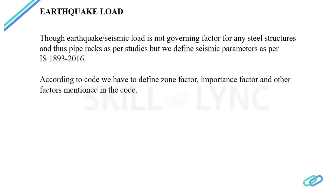Earthquake load is not as governing a factor for steel structures or pipe racks — it is a rare case that earthquake governs. However, seismic parameters are defined as per IS 1893:2016, the latest Indian code. Since IS 800 for steel mandates that earthquake loads be applied, we must include them regardless of whether they govern or not.